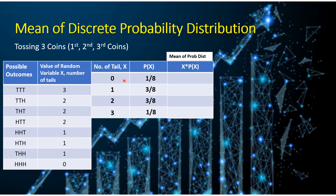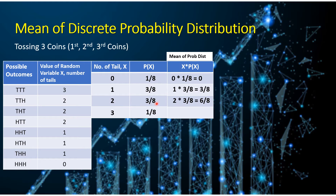For example, in our first row, you have 0 times 1 over 8, so you will have the value equal to 0. For the second row, same procedure: we simply multiply 1 by 3 over 8, so we have 3 over 8. Next, we have 2 times 3 over 8, which gives 6 over 8. And lastly, you have 3 times 1 over 8, and you will have a product of 3 over 8.